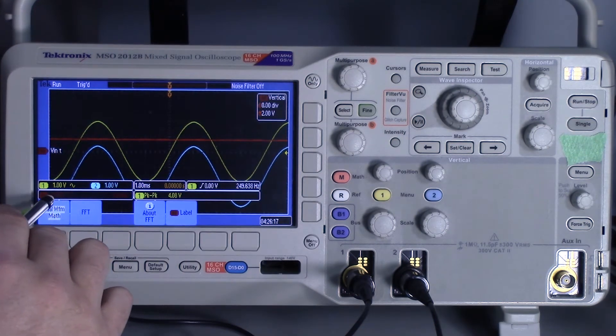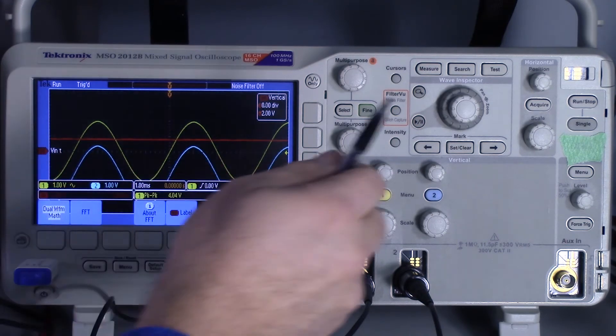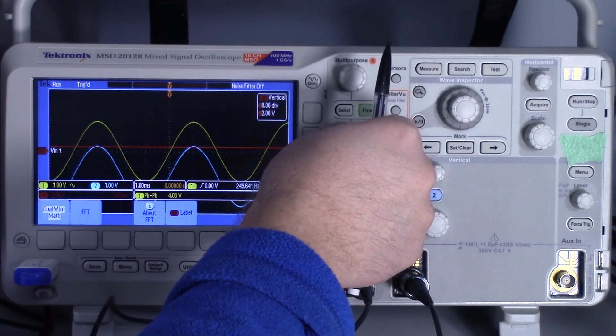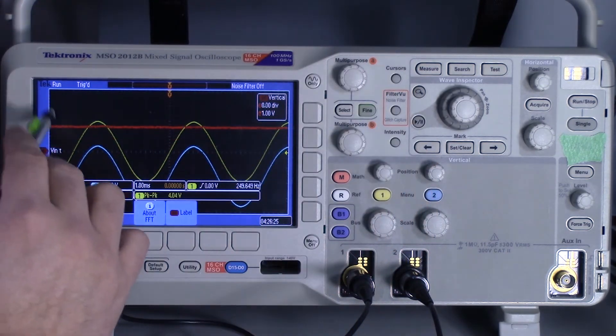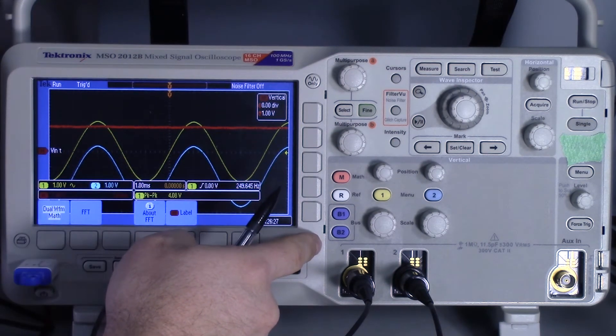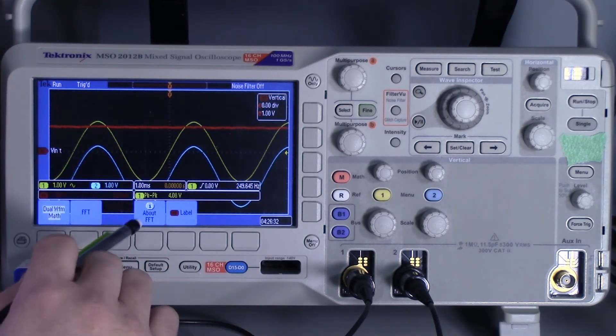Now we can see the voltage per division scale for the math is 2. I want to change that to 1, so it's the same gradation as the other channels.